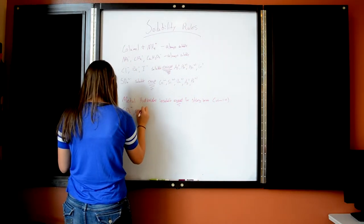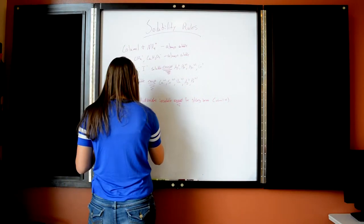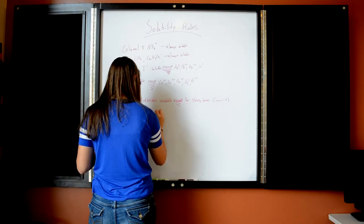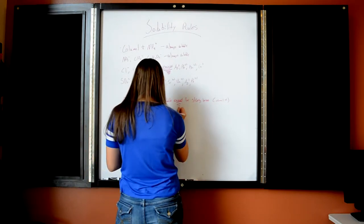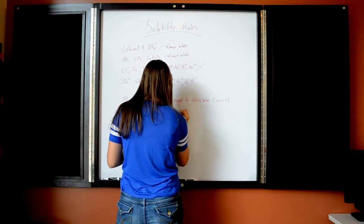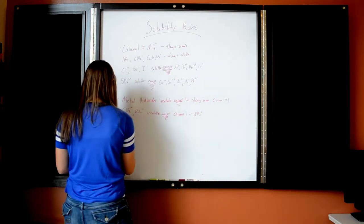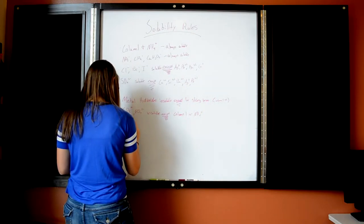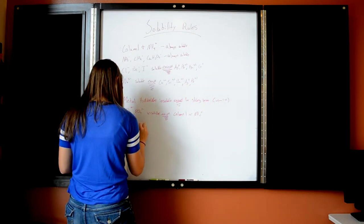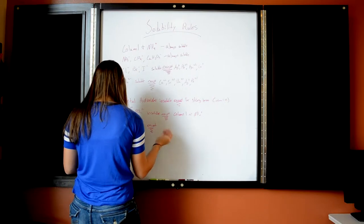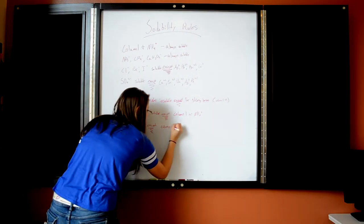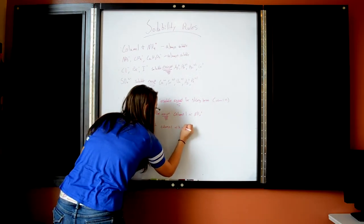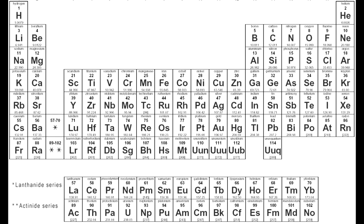Also, carbonate and phosphate are insoluble except for column 1 and ammonium, because column 1 and ammonium are always soluble. And sulfide is insoluble except for column 1 and ammonium — but with sulfide, we also add column 2.